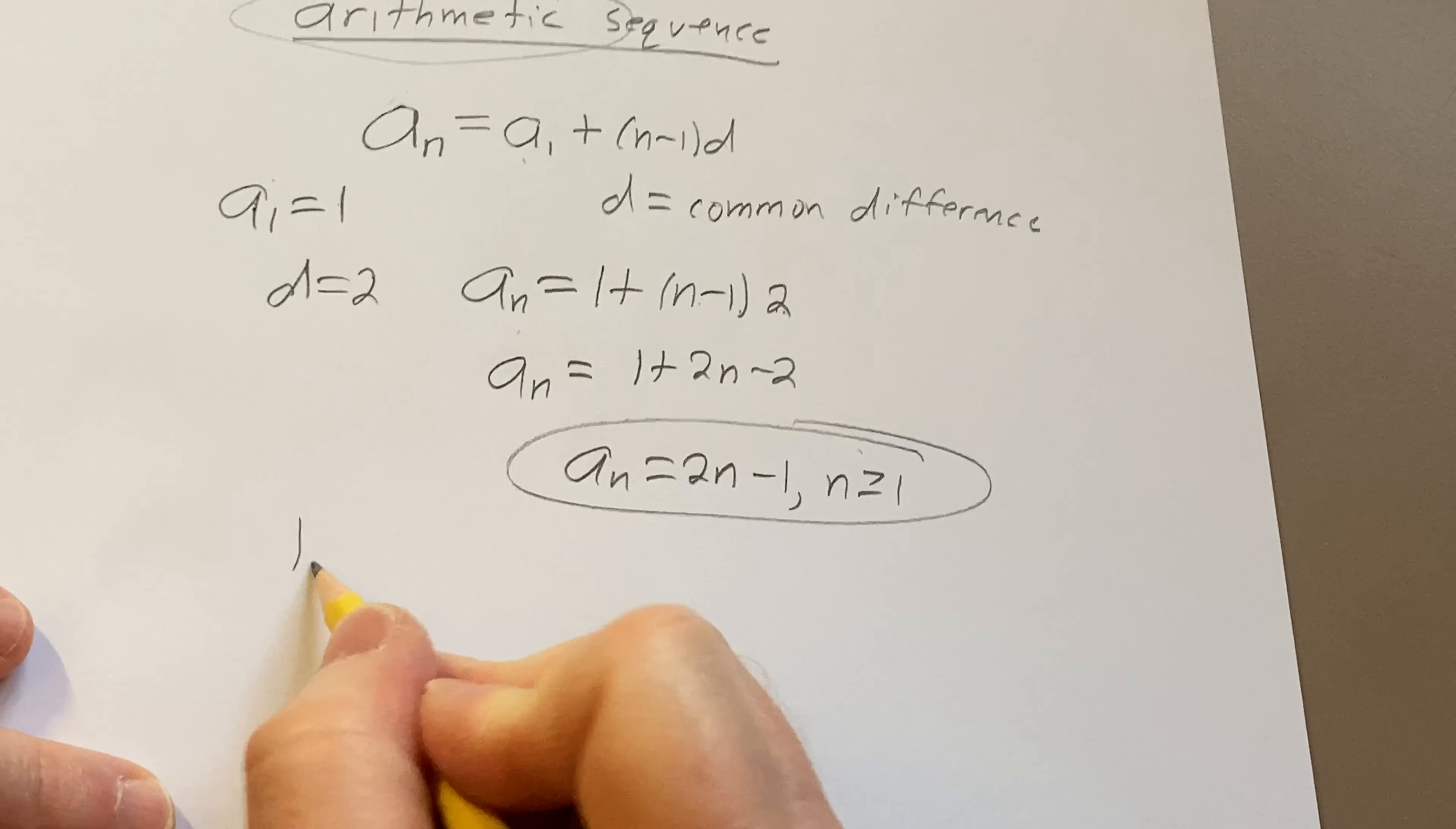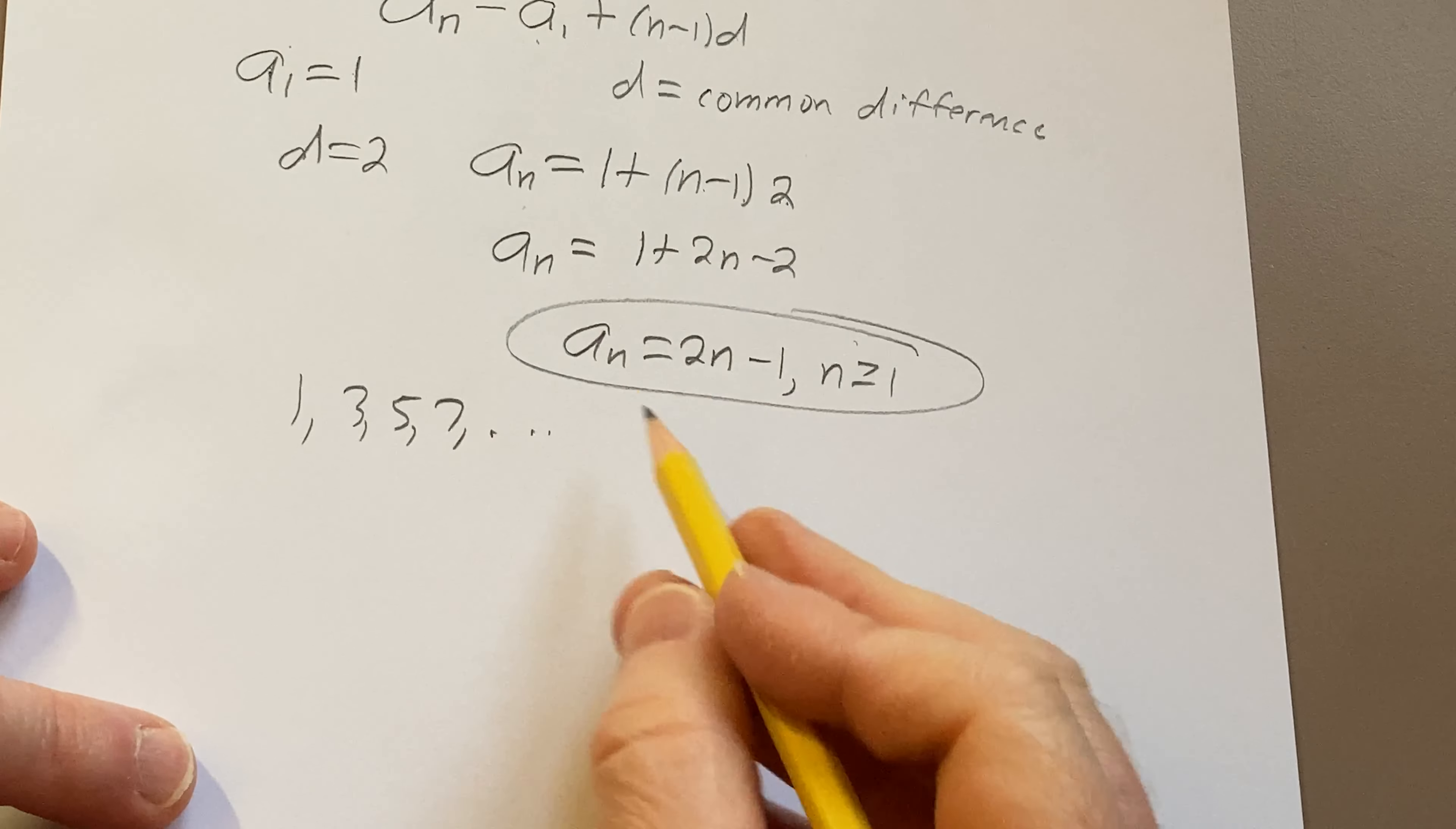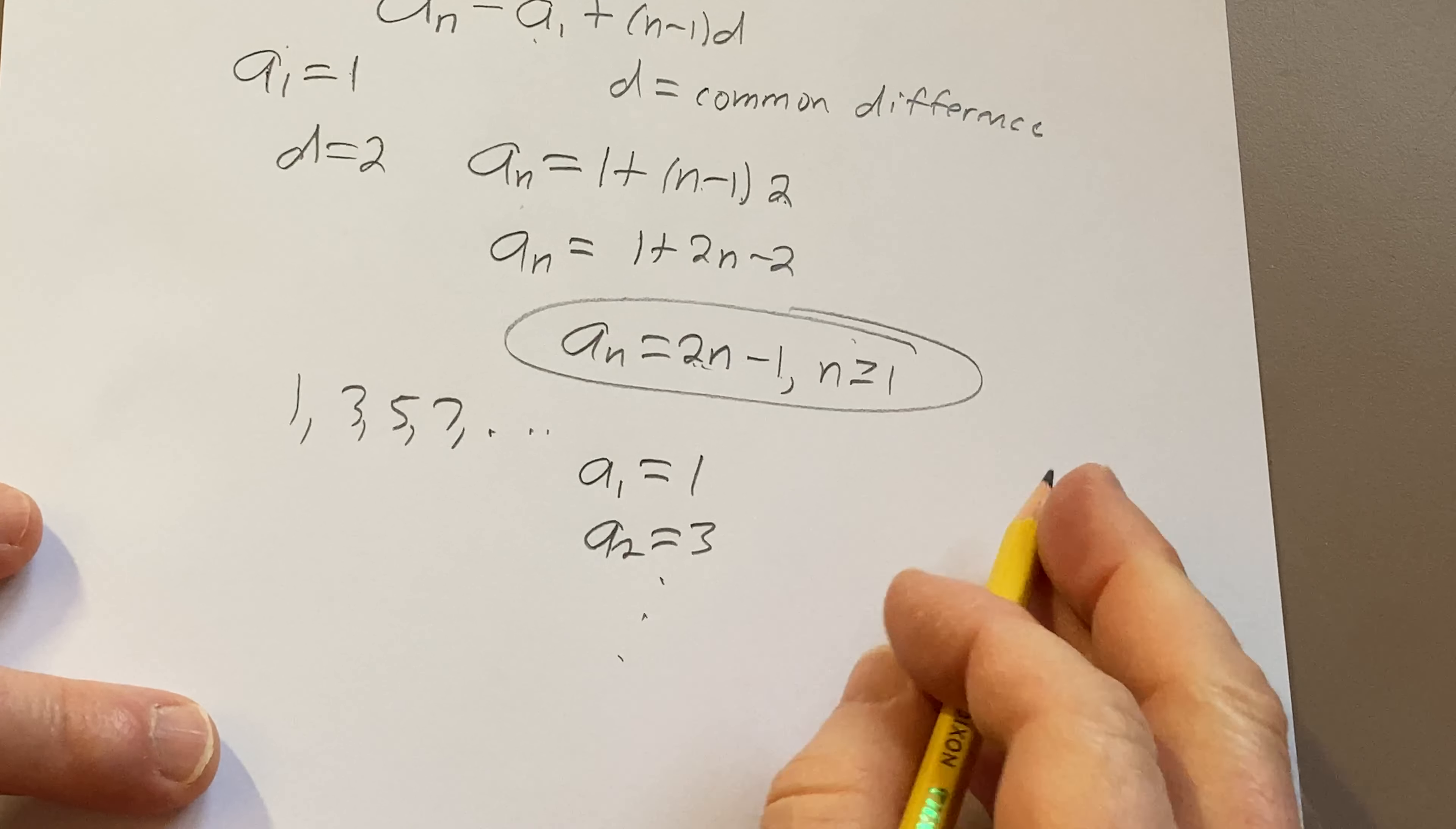And that should give us the numbers 1, 3, 5, 7, etc. The next one's going to be 9. For example, if we plug in 1, 2 minus 1 is 1. Plug in 2, 4 minus 1 is 3, etc. So it works out perfectly.